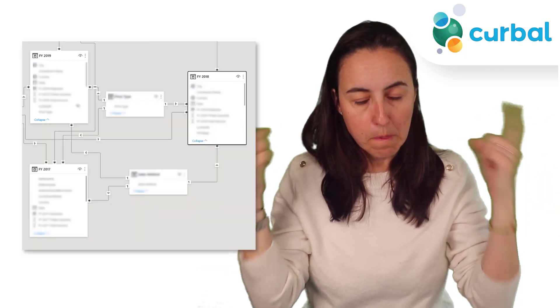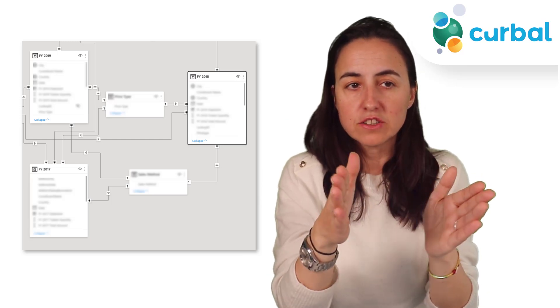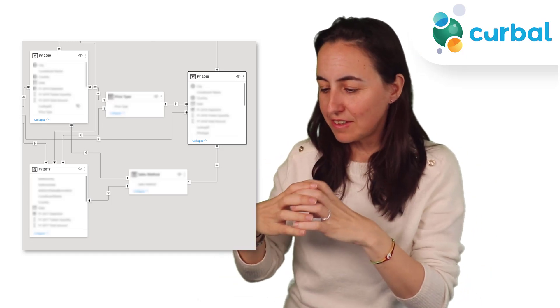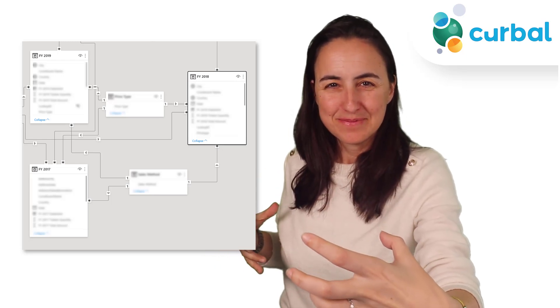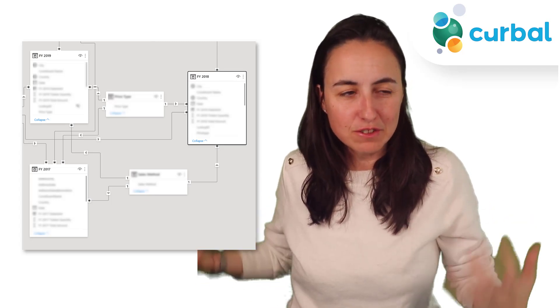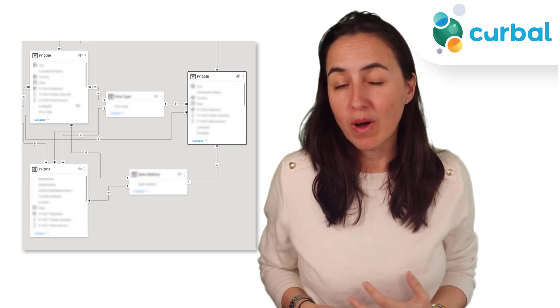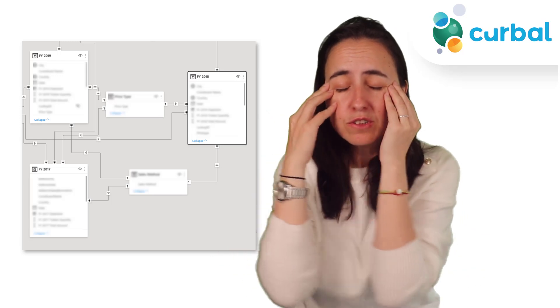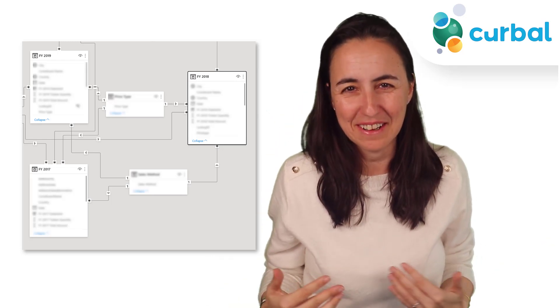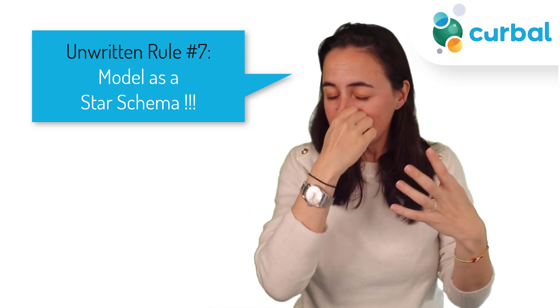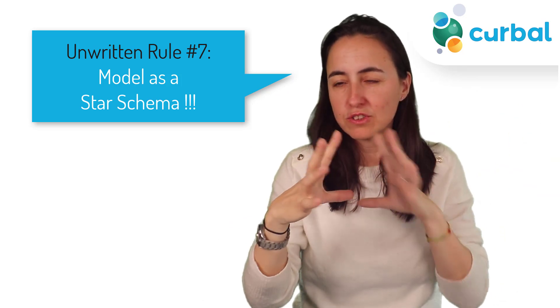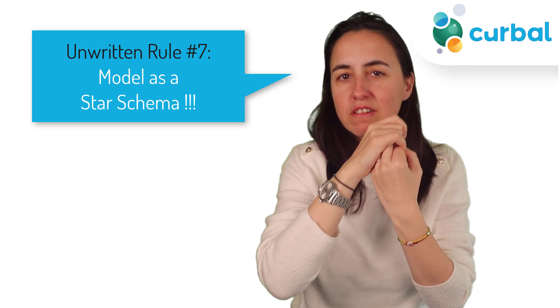I've seen it many times: you open a model and see 'Sales 2019' as one table, 'Sales 2020' as another, 'Sales 2021' as yet another. All of that should be one big sales table. Pivoted data and separate tables for different years will give you away as a beginner and make your DAX insanely difficult. The unwritten rule is to unpivot your tables and find your optimal star schema model.